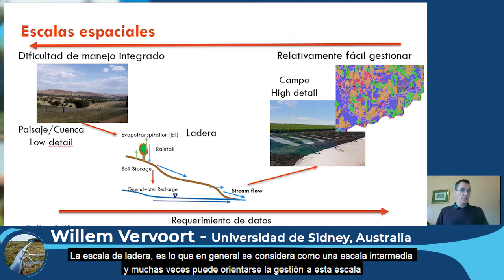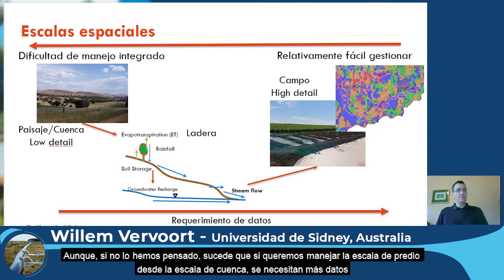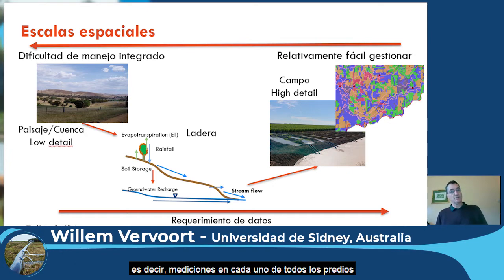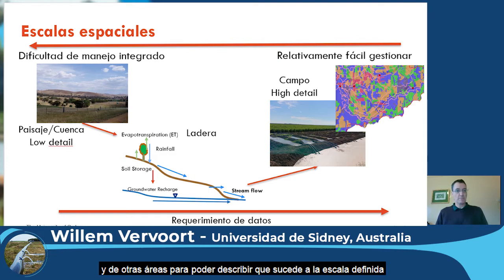The hill slope scale is what we generally consider as the intermediate scale, and sometimes we want to manage things at that scale. If you do want to manage the smaller scale from the catchment level, then you need a lot more data. You need to actually measure all those different spatial fields and areas to be able to say something about what happens at the fine scale.